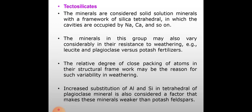Tectosilicates: the minerals are considered solid solution minerals with a framework of silica tetrahedra in which the cavities are occupied by sodium, calcium, and so on. The minerals in the group may also vary considerably in resistance to weathering — for example, eucite and plagioclase versus potash feldspars. The relative degree of close packing of atoms in their structural framework may be the reason for such variability in weathering. Increased substitution of Al for Si in tetrahedra of plagioclase minerals is also considered a factor that makes these minerals weaker than potash feldspars.